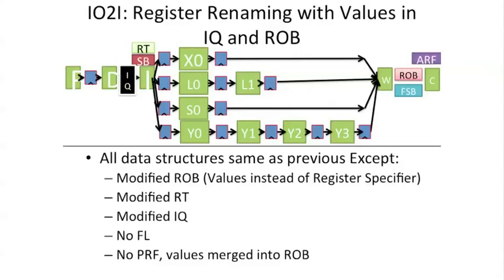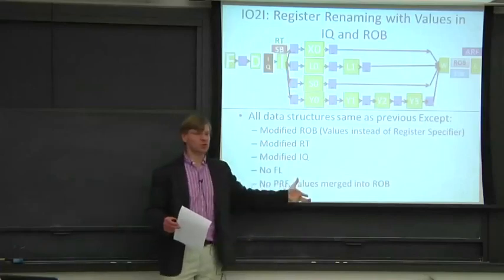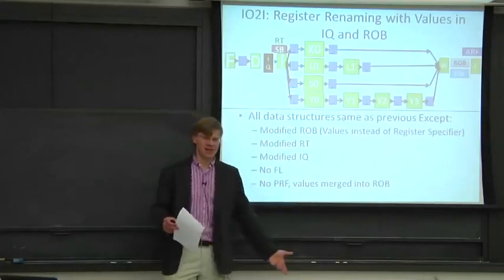Let's move on to our second scheme. If we go back to the earlier slide, we said that we can either store pointers in the instruction queue and have pointers in the reorder buffer, or we can just store the values. If you go read the original reservation station paper by Thomas Soule, he actually stores the values in the reorder buffer.